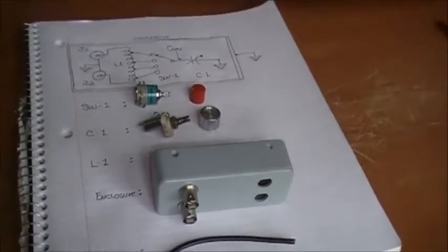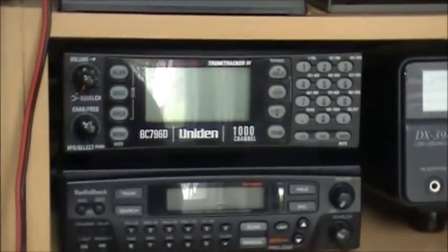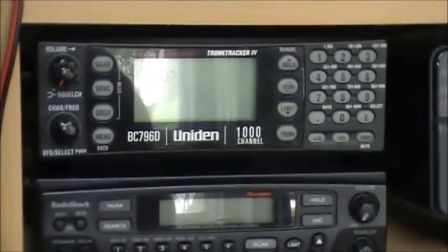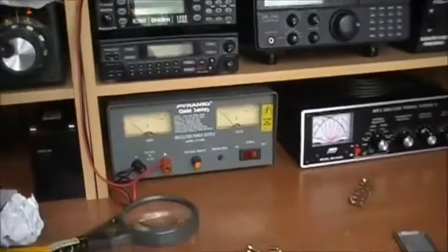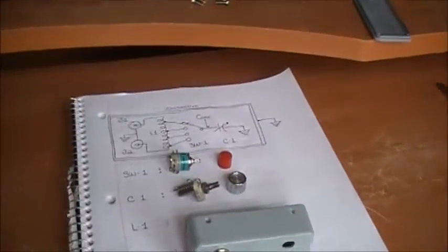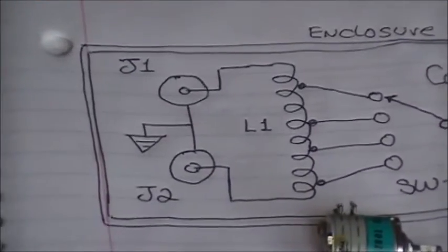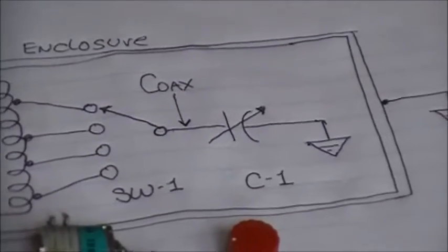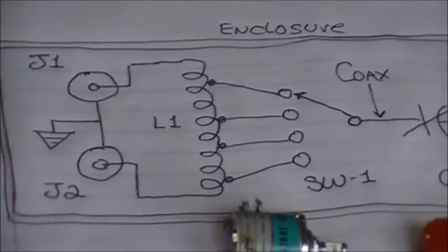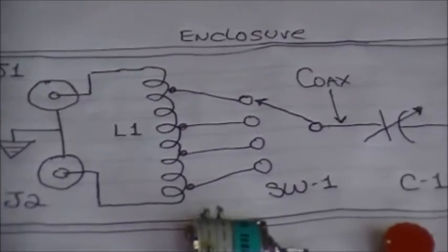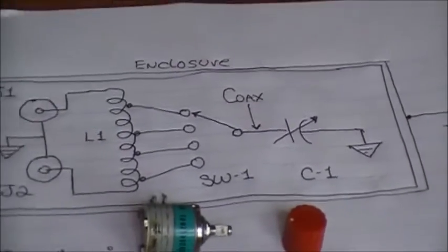Today we're going to build another antenna tuner that hopefully will work on VHF and UHF for my Bearcat and any other scanner. The schematic is right here - your input-output, coil, switch, and tuning cap. It's fairly easy. Everything's grounded. The coil isn't going to be grounded in this one, it's going to be grounded through the variable capacitor in the enclosure.